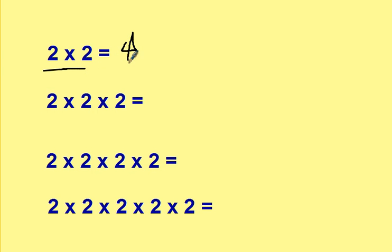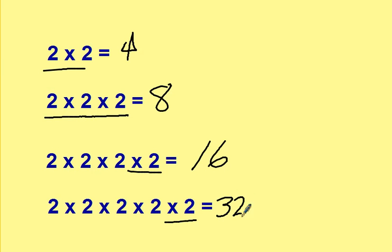2 times 2 is 4. 2 times 2 is 4, times another 2 is 8, times another 2 would be 16, times another 2 would be 32. There's another way to write this, though.